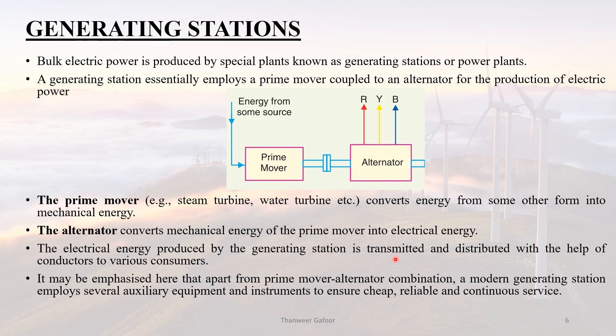Electric energy produced by the generating station is transmitted and distributed with the help of conductors to various consumers. Apart from the prime mover and alternator combination, a modern generating station embraces several auxiliary equipment and instruments. Transmission means carrying power from the generating station to a power station, and from power station to power station.